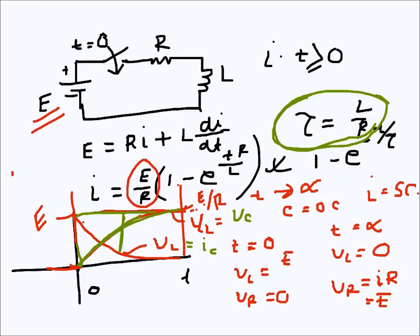For a capacitor, we will have similar expressions, just reversed. The voltage relation for a capacitor will be like the current one for an inductance, and the current relation for a capacitor will be like the voltage one for an inductance.